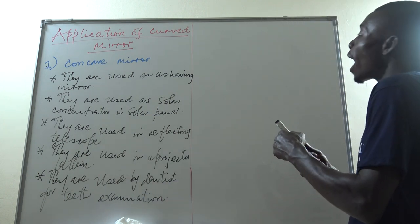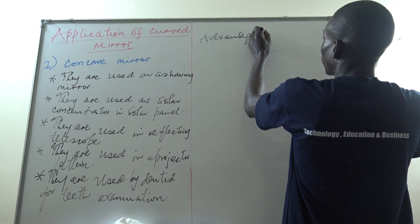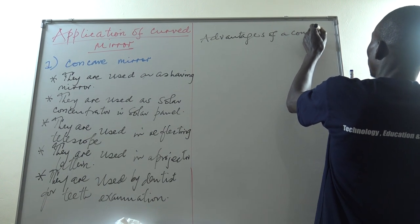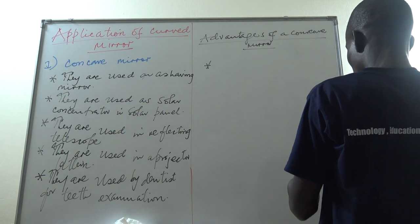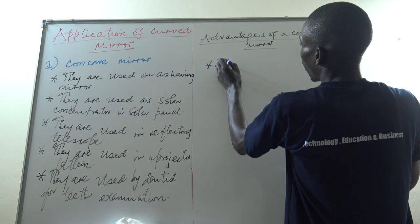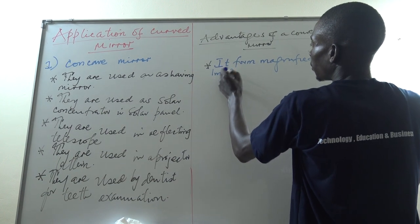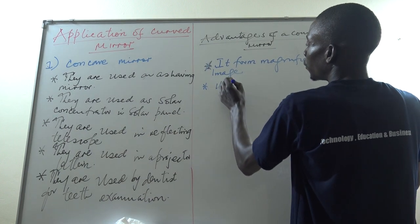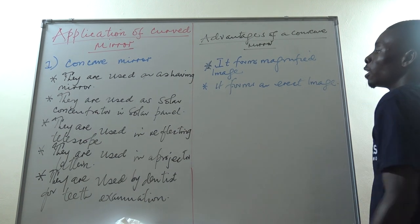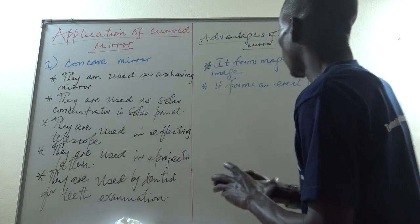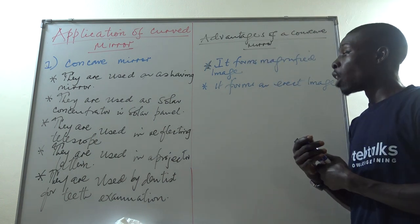Those are the main uses of the concave mirror. Now let's look at the advantages of the concave mirror. One advantage is that in some cases it forms a magnified image. Another advantage is that it can form an erect image, which is very useful in many of its applications.